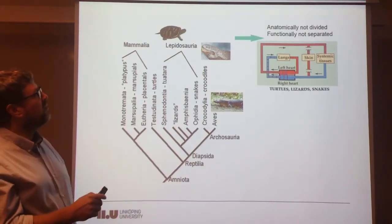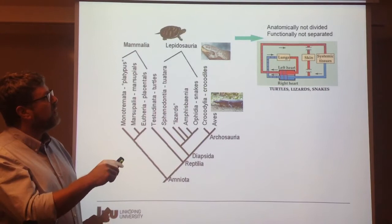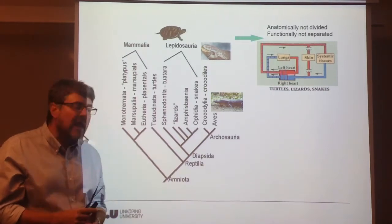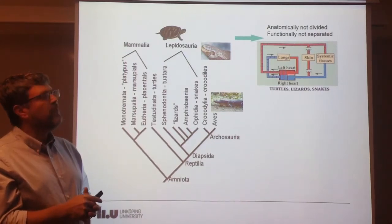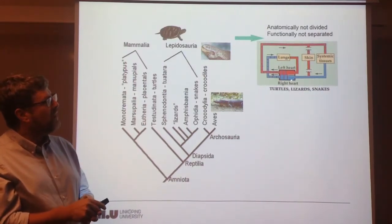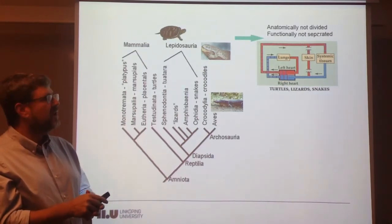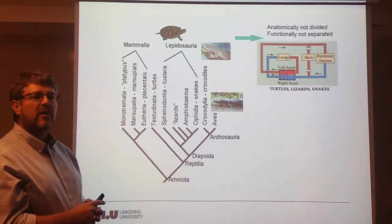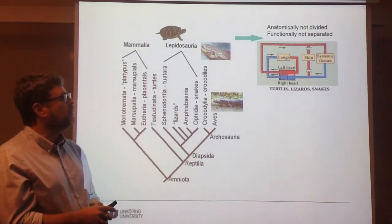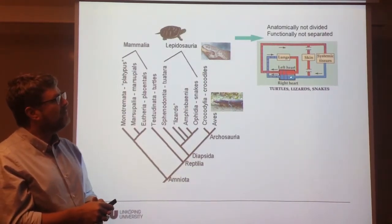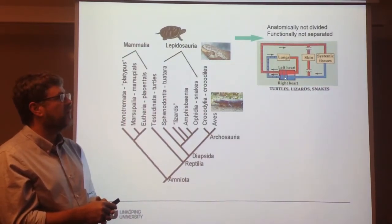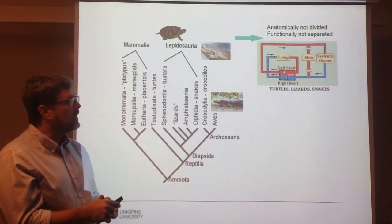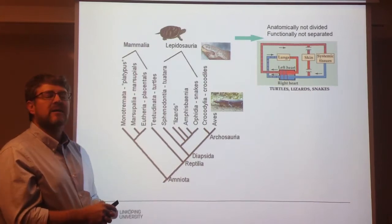In the first place, we have turtles and squamates — lizards and snakes — where we have an anatomically not divided ventricle, and a functionally not separated ventricle. But we will see that there are some differences. This is what was considered once upon a time. So we have a heart that is not fully divided, and that allows or has a potential for mixing of oxygenated and deoxygenated blood, shown here in blue and red, with mixing taking place.